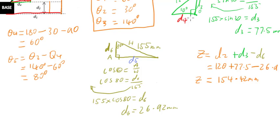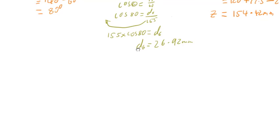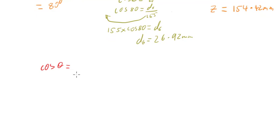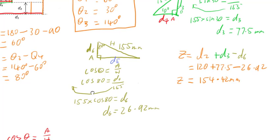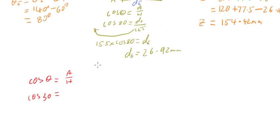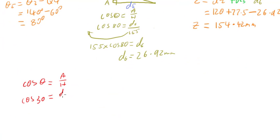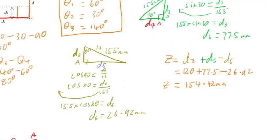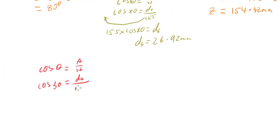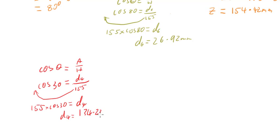For d4, it is now the adjacent side of our triangle. Because I've got the adjacent side and the hypotenuse, I'm going to use the cosine rule to work out d4. Cos θ = adjacent / hypotenuse. Cos of 30 degrees = d4 / 155, multiplying that 155 up so we get d4 on its own. We can now work out d4 to be 134.23 millimetres.